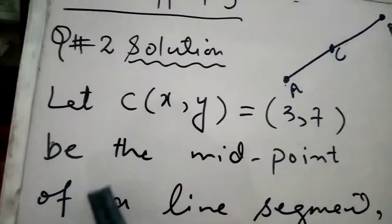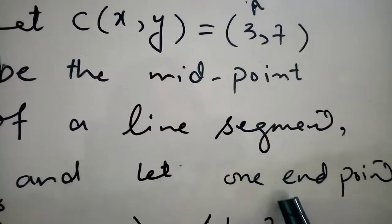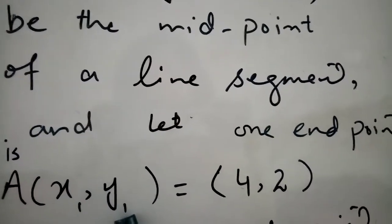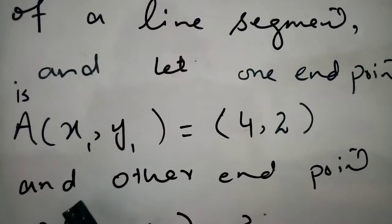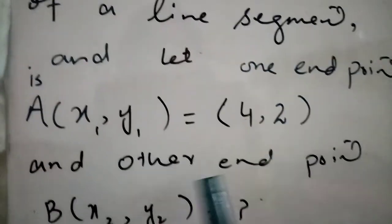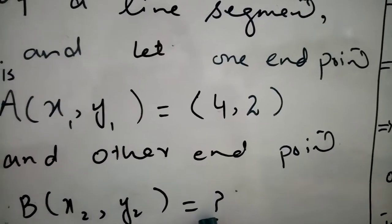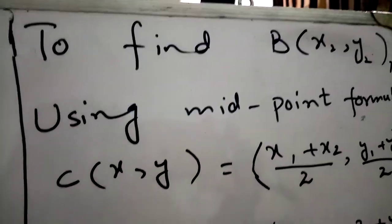And let one endpoint be A(x₁,y₁), which is also given, equals (4,2). And the other endpoint is B(x₂,y₂) equals question mark. To find B(x₂,y₂), that is, to find the other endpoint.